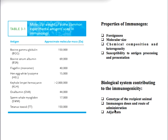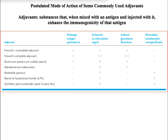The next factor is the presence or absence of adjuvants. Adjuvants are substances that are mixed with the antigen or immunogen and injected into the system to boost the immune response. There are many postulated mechanisms by which adjuvants function: antigen persistence is prolonged, they may induce co-stimulatory signals, cause local inflammation, or stimulate non-specific proliferation of lymphocytes.